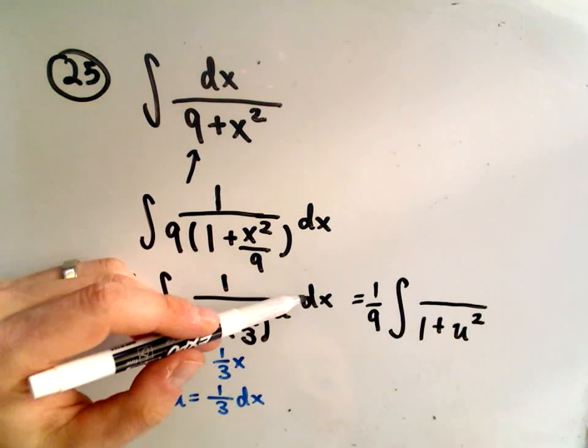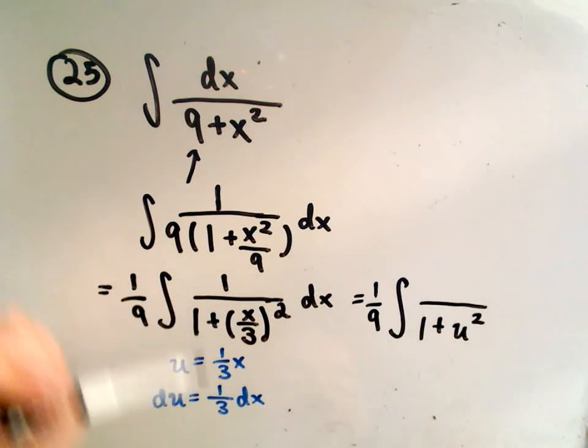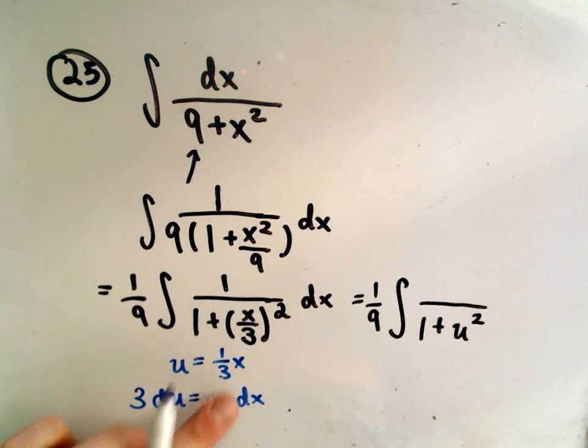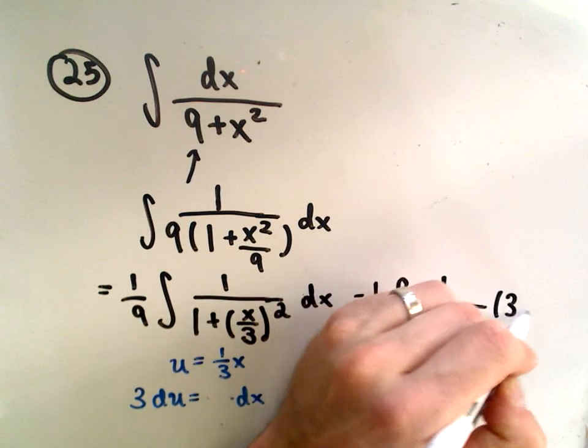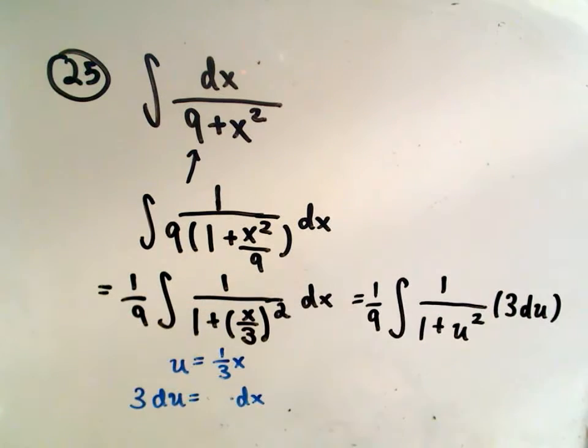I would like to have a 1 dx left over in my problem, but instead I have 1/3 dx. Well, if I multiply both sides by 3, it says 3 du is going to be equivalent to dx. So I'll have a 3 du being replaced, that will be replacing my dx term.